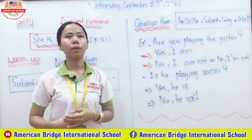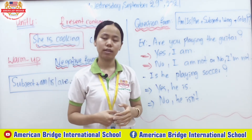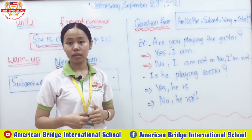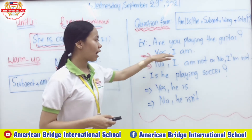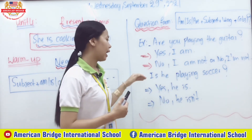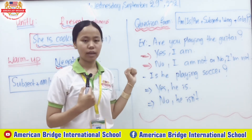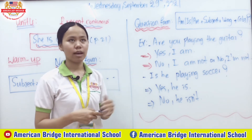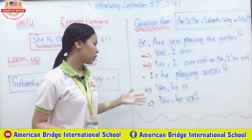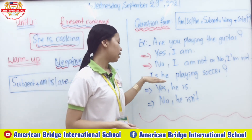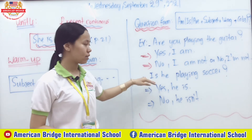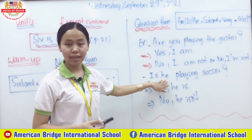To respond when someone asks a question using the present continuous, it is the same as with the verb 'to be.' So: 'Yes, I am,' 'No, I am not,' or 'No, I'm not.' If they use 'is,' you respond: 'Yes, he is,' 'Yes, she is,' 'No, she isn't,' 'No, he isn't.' For example: 'Is he playing soccer?' — 'is' is the verb to be and 'he' is the subject.